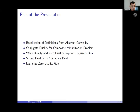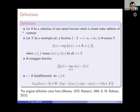The plan of my presentation is: first we introduce definitions of abstract convexity, then we construct the conjugate dual for our main problem, next we discuss zero duality gap for the conjugate dual, then strong duality, and finally the relationship between the conjugate dual and the Lagrangian dual.